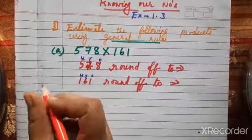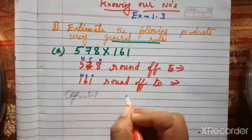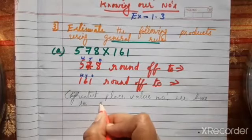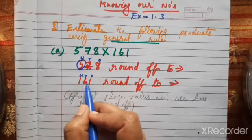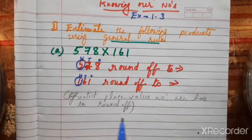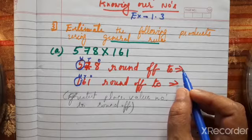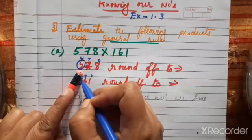Check the place value of 578: ones, tens, hundreds — so hundreds is the highest place. According to the general rule, we round off to the greatest place value. The starting digit 5 is in the hundreds place, so we circle 5 and round off that digit.